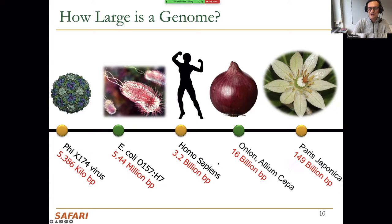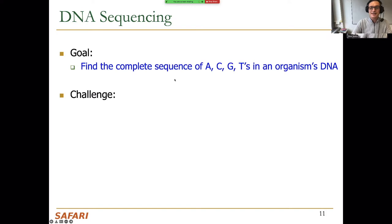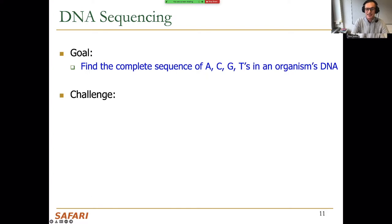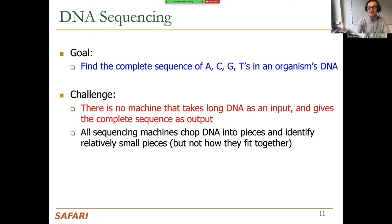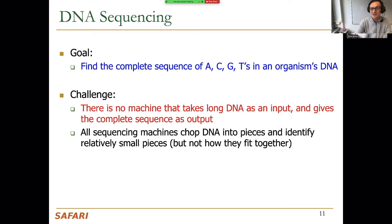The size of a genome varies across species. Humans are somewhere in the middle — not extremely large, but large enough to cause problems in computation. The goal in DNA sequencing is to find the complete sequence of characters in an organism's DNA so that you can query it. Unfortunately, there is no machine that takes long DNA as input and gives the complete sequence as output. All sequencing machines are basically choppers — they chop DNA into pieces and identify relatively small pieces, but they don't tell you how they fit together.